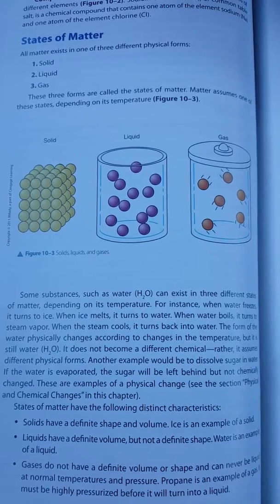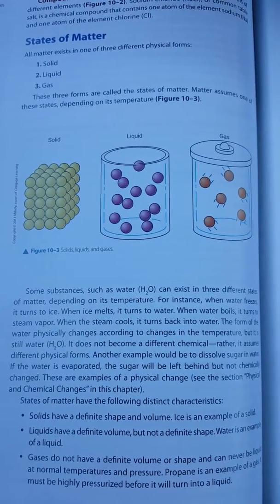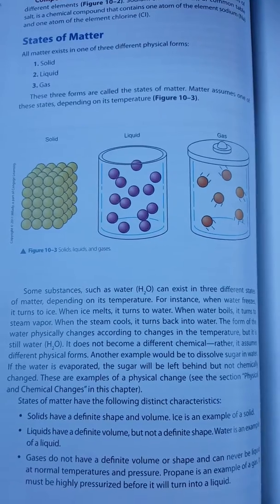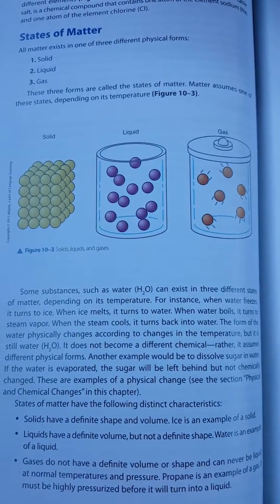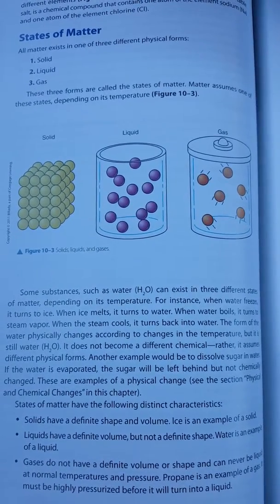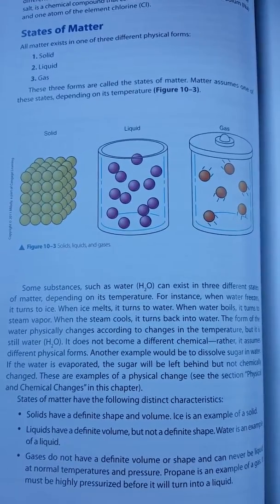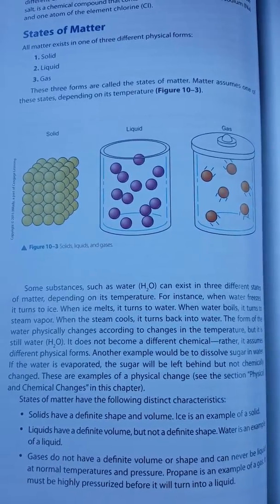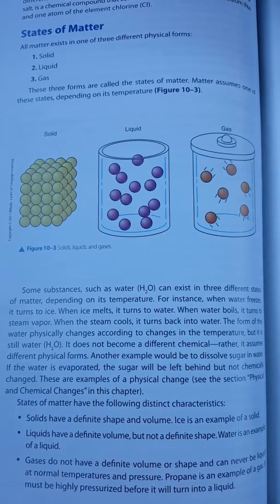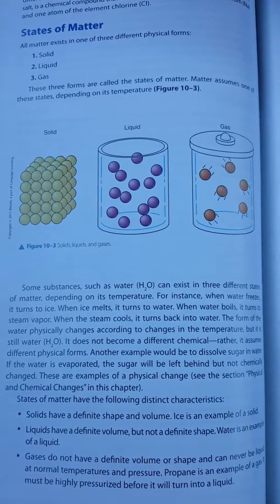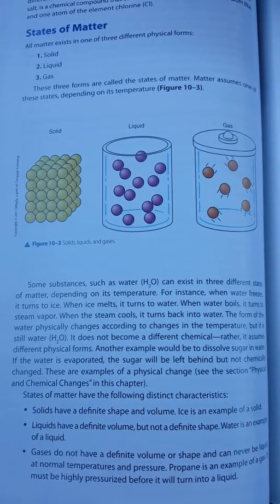It does not become a different chemical. Rather, it assumes different physical forms. Another example would be to dissolve sugar in water. If the water is evaporated, the sugar will be left behind, but not chemically changed. These are examples of physical change. See the section on physical and chemical changes in this chapter.